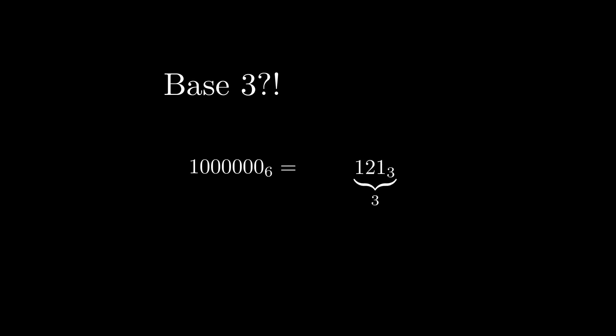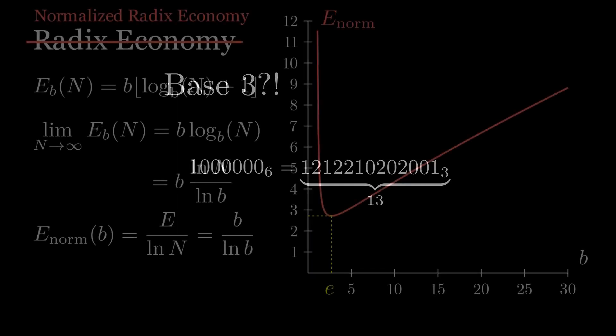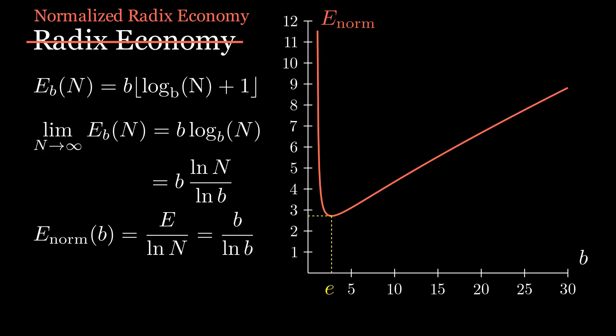In base 3, a million has to be written like this. That's a lot of digits. But radix economy isn't actually about the number of digits. If all we cared about was the number of digits, it would be 1 over log b. But the actual formula we found was b over log b.